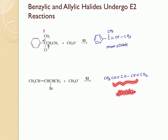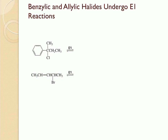Can benzylic and allylic halides also undergo E1 elimination reactions? They can, because they are able to form stable carbocations. Once the leaving group leaves, it's going to form a benzylic carbocation — in this case, a tertiary benzylic carbocation. Once that carbocation is formed, we can abstract the beta hydrogen.